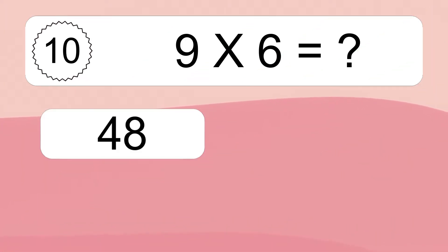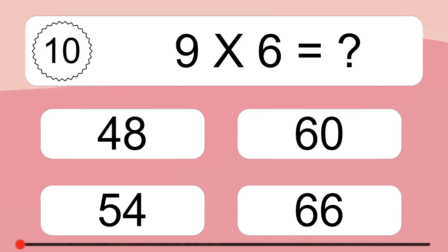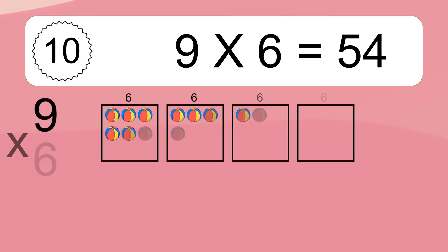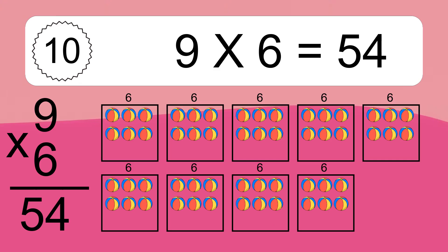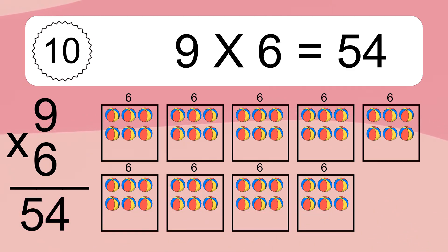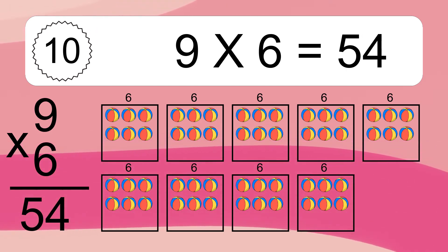9 times 6 equals what? 9 times 6 equals 54. We have 9 boxes, and each box has 6 colorful balls inside. If you count all the balls in all the boxes together, you will have 9 times 6 balls. This equals 54 balls.